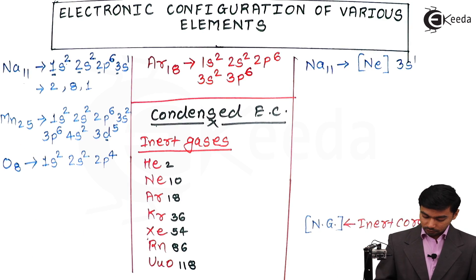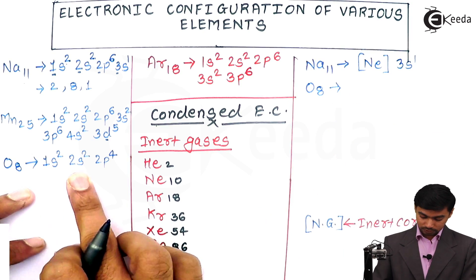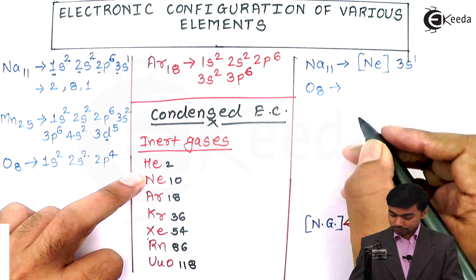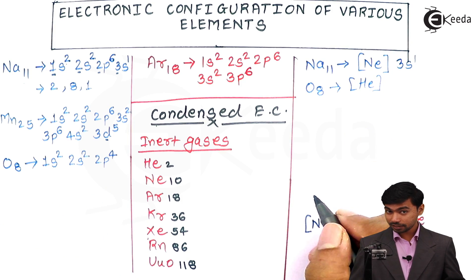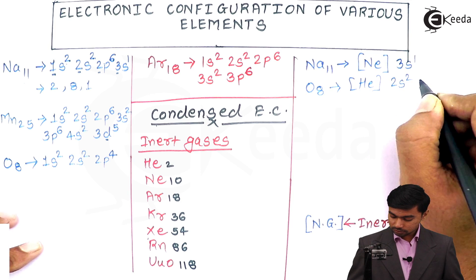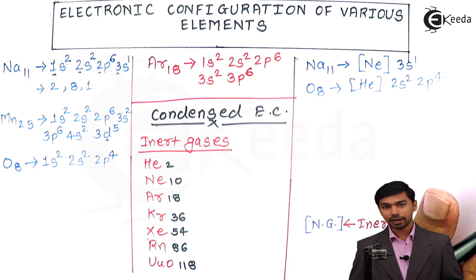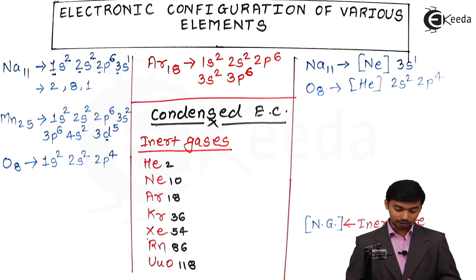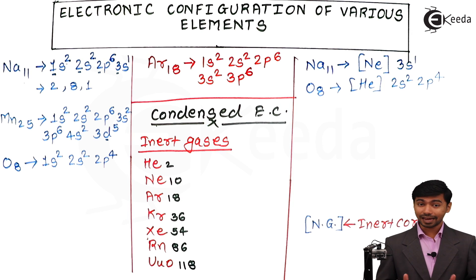The same method applies to oxygen (Z=8). Previously we wrote 1s², 2s², 2p⁴. Using the condensed method, the nearest inert gas below 8 is helium (Z=2). So we make a helium inert core, leaving 6 electrons: 2s², 2p⁴ — giving 2 + 4 = 6. The condensed electronic configuration of oxygen is [He] 2s²2p⁴. We can use either the conventional or condensed method for any element.